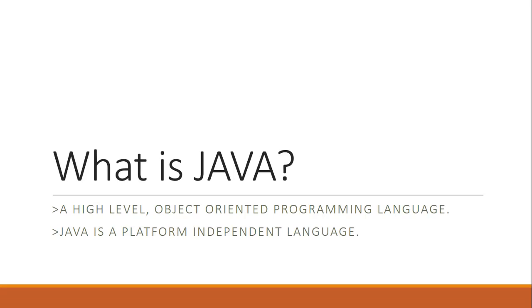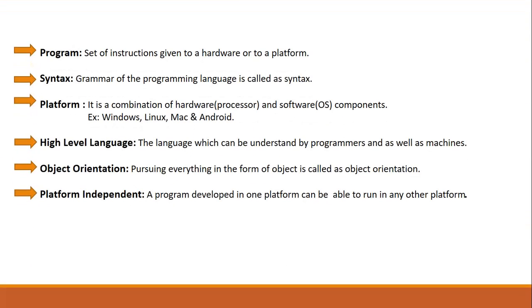The question is: what is Java? The proper definition which we have to give is — Java is a high-level object-oriented programming language, and it is a platform-independent language. Now we know this definition, but we have to understand these words: what is high-level, what is object-oriented, what is a programming language, and what is platform-independent. So let's go to the next slide and discuss more about these terms.